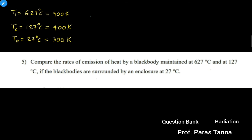We have to compare the rates of emission of heat by that black body — that means we have to find out the ratio of the rate of emission in the first case, R1, divided by the rate of emission of heat in the second case, R2. So we have to find out R1 divided by R2.